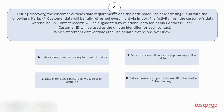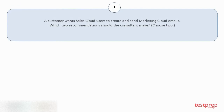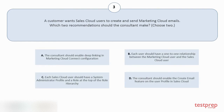The correct answer is option A. Question number three: A customer wants Sales Cloud users to create and send Marketing Cloud emails. Which two recommendations should the consultant make? Choose two. Options: A) The consultant should enable deep linking in Marketing Cloud Connect configuration. B) Each user should have a one-to-one relationship between the Marketing Cloud user and the Sales Cloud user. C) Each Sales Cloud user should have a system administrator profile and a role at the top of the role hierarchy. D) The consultant should enable the create email feature on the user profile in Sales Cloud.